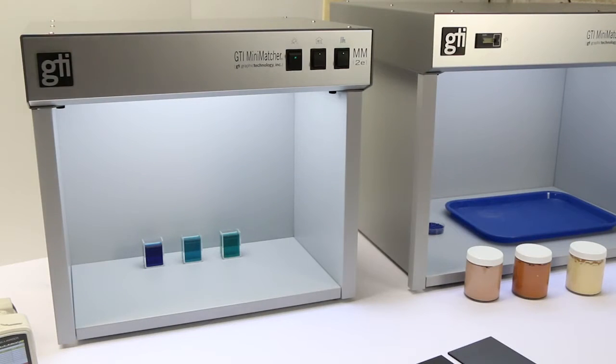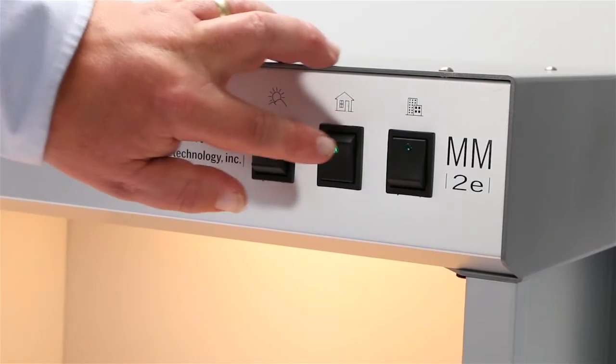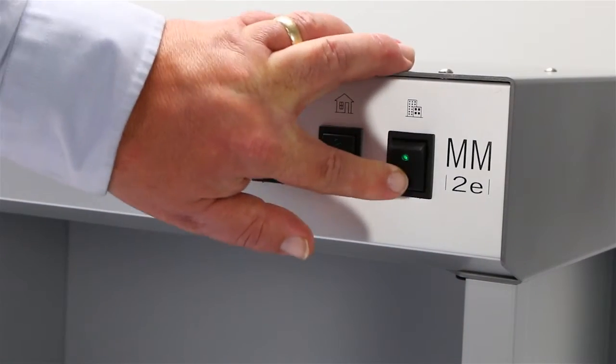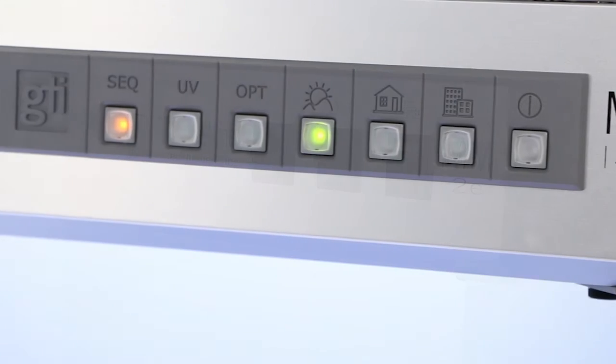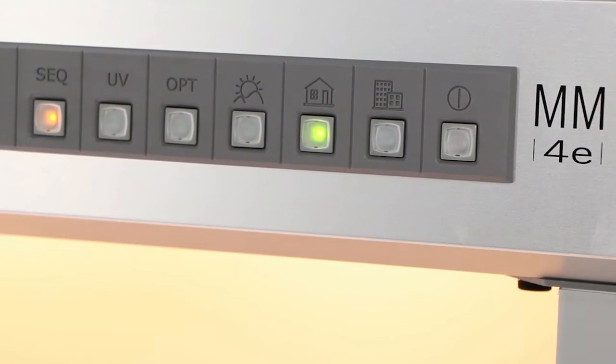Our mini-matcher series are compact and economical with up to five distinct spectral sources of illumination. They are easy to operate and can be set up in minutes.